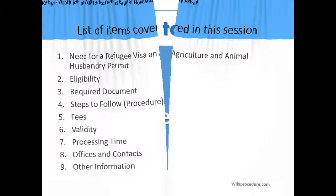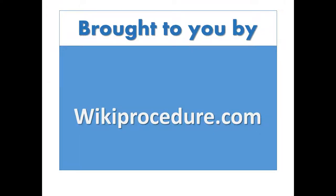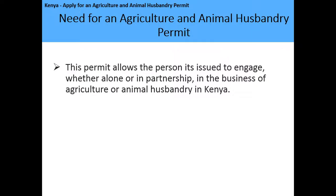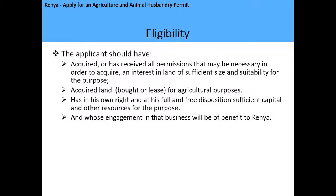Welcome to our presentation, brought to you by wikiprocedure.com. The need for an agricultural and animal husbandry permit: this permit allows the holder — the person it is issued to — to engage, whether alone or in partnership, in the business of agriculture or animal husbandry in Kenya.